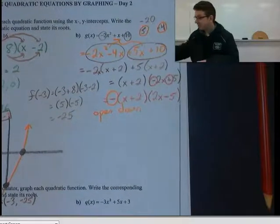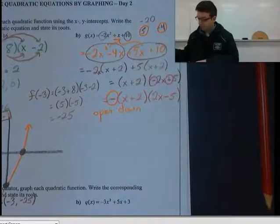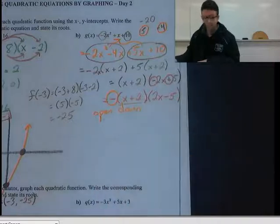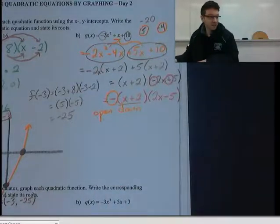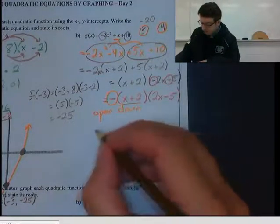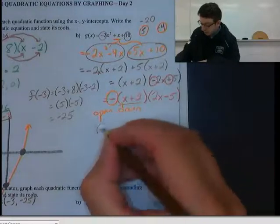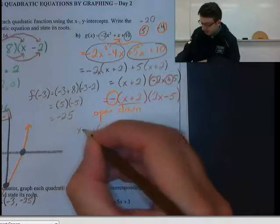And then we also need our x-intercepts. Now this one's pretty easy to tell. Our x-intercept will be negative 2. So we can write that as a coordinate, minus 2 and 0. Here's our x-intercepts.